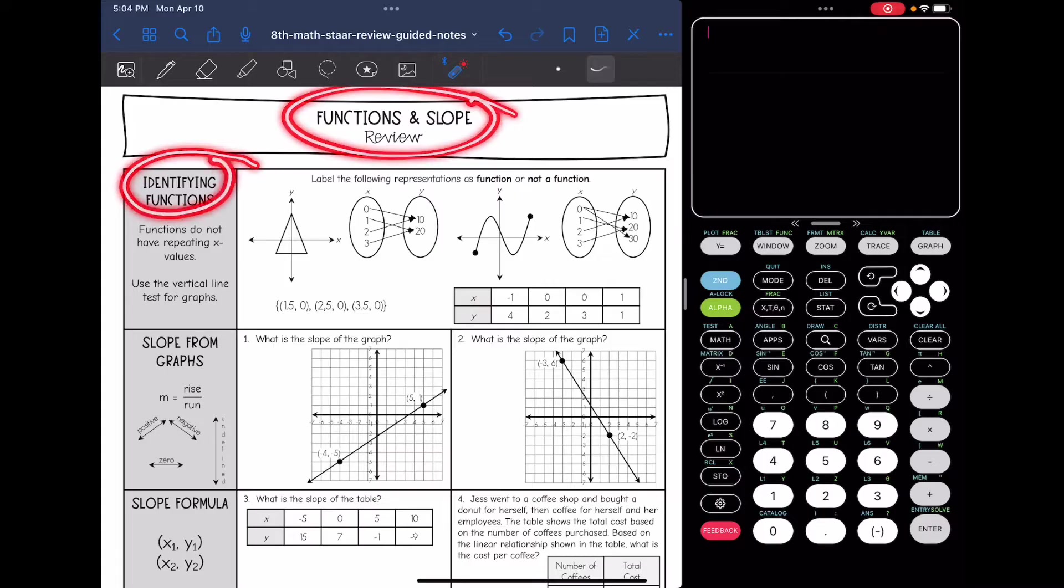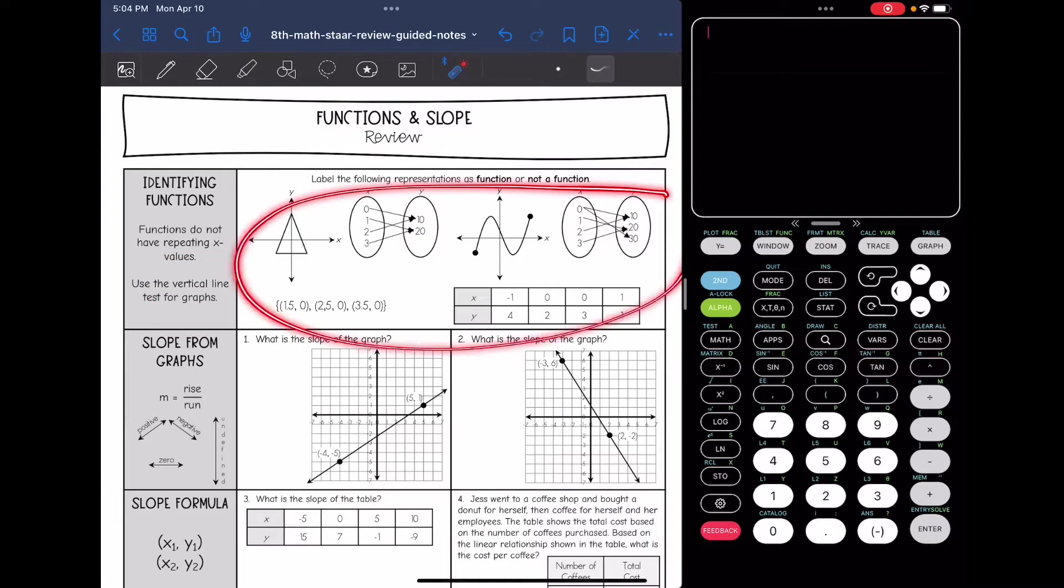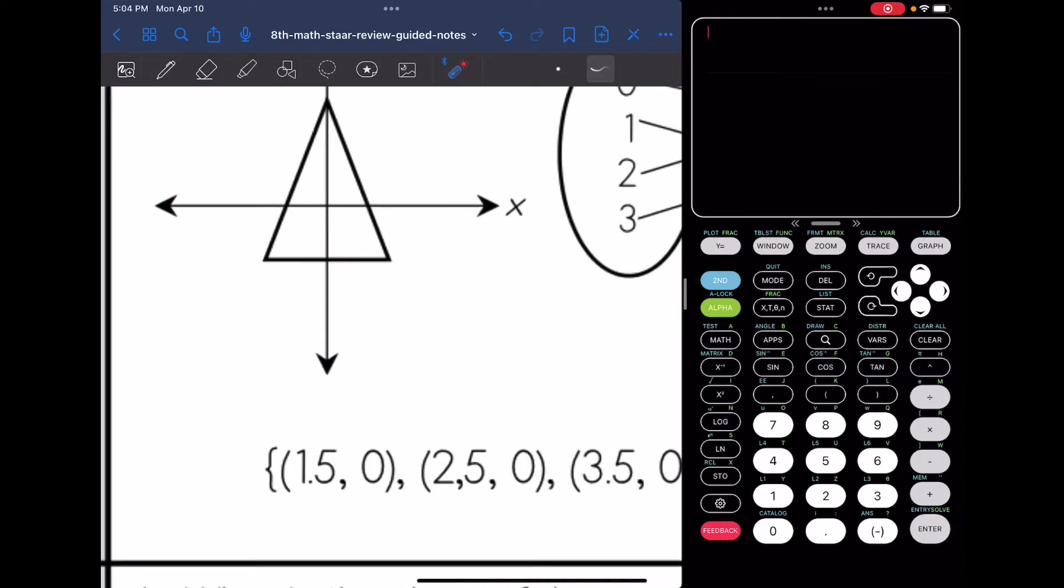So let's start with identifying functions. Remember, a function is where each input has exactly one output. So they do not have repeating x values. And for graphs, you will use the vertical line test to determine if it's a function or not. So we're going to look at these representations and label them as function or not a function.